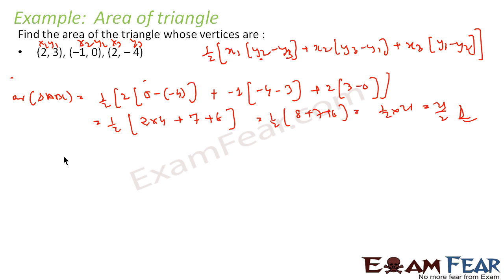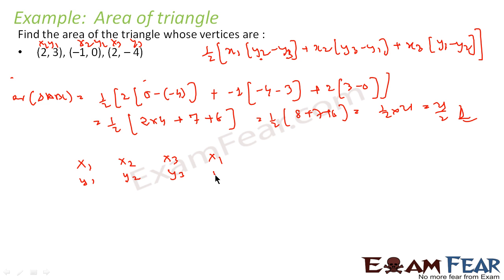So what you have to do here is just write like this: x1, y1, x2, y2, x3, y3, and then x1, y1 again. So you write x1, x2, x3, then again x1, and y1, y2, y3 — this you have to write.